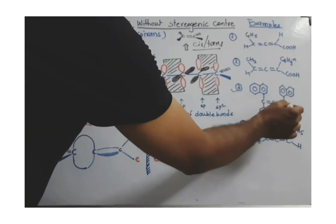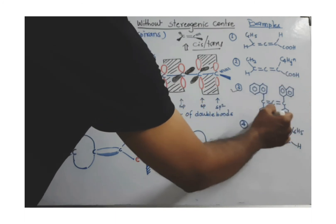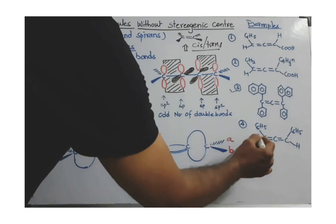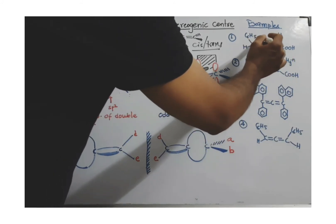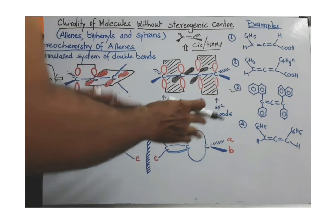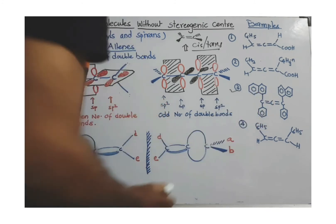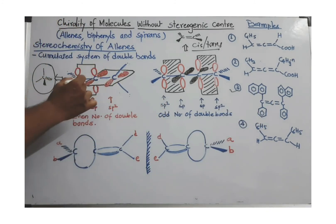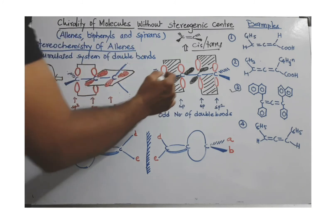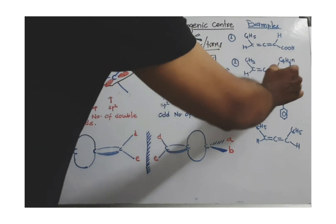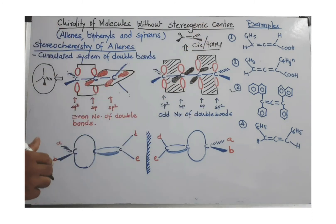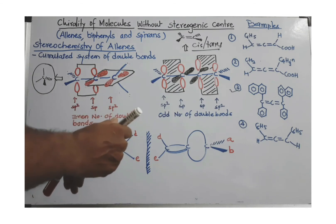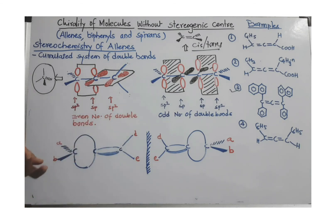With only two different groups attached at the terminal carbons, the molecule is optically active. In another example, three different groups are present — one, two, and three. So the requirement is: at least two different groups must be at the terminal carbons, and an even number of double bonds must be present in the allene or cumulene for it to be optically active. If an odd number of double bonds is present, or if all groups are the same, the molecule cannot show optical activity and can be rejected at once. That is all about the stereochemistry and optical activity of allenes.